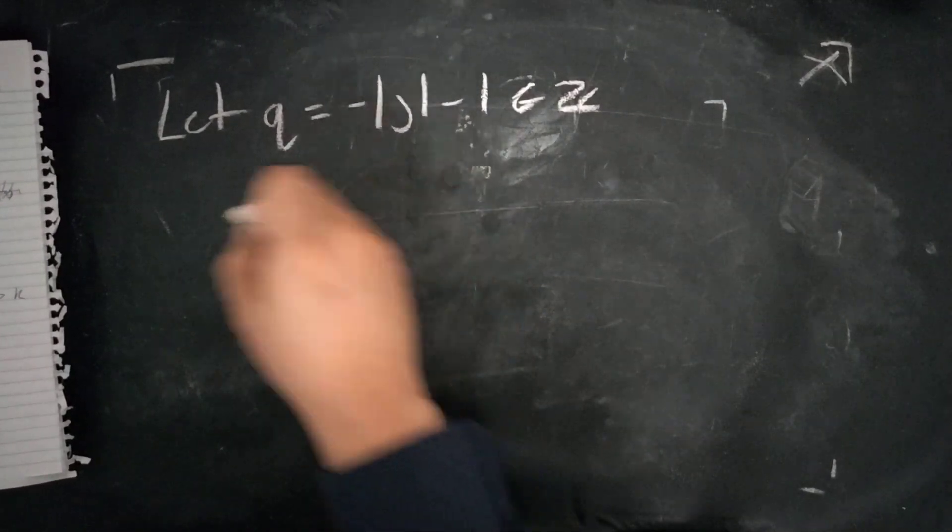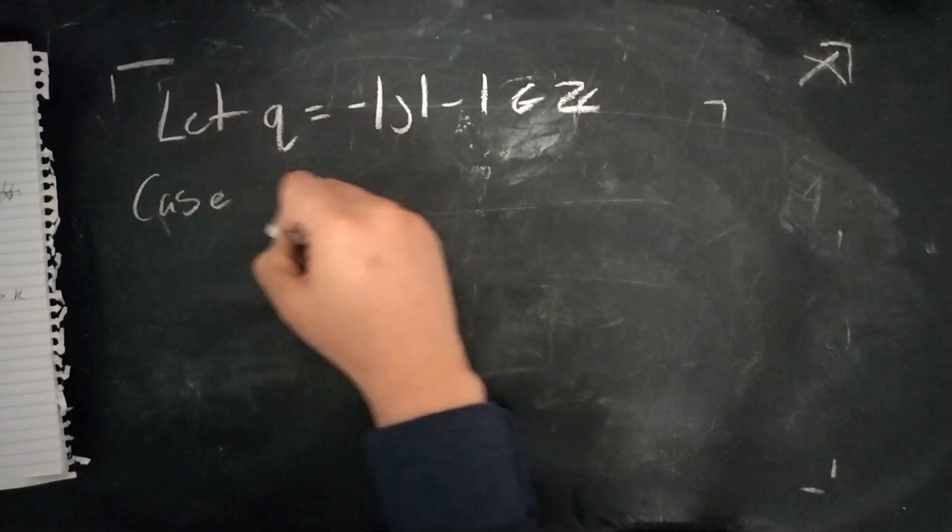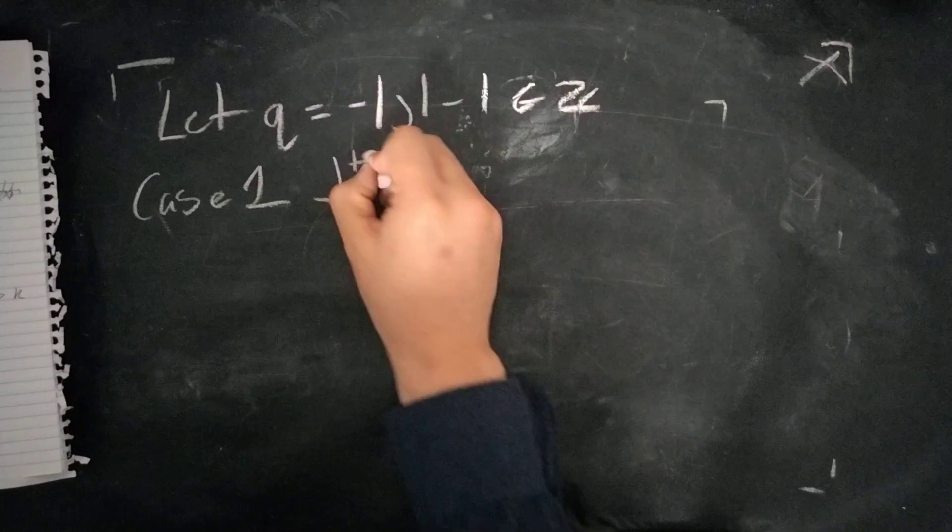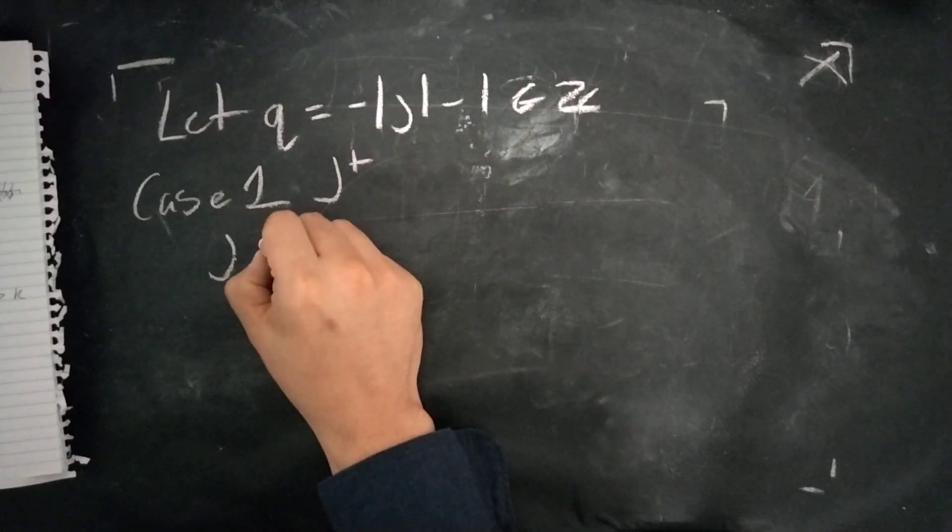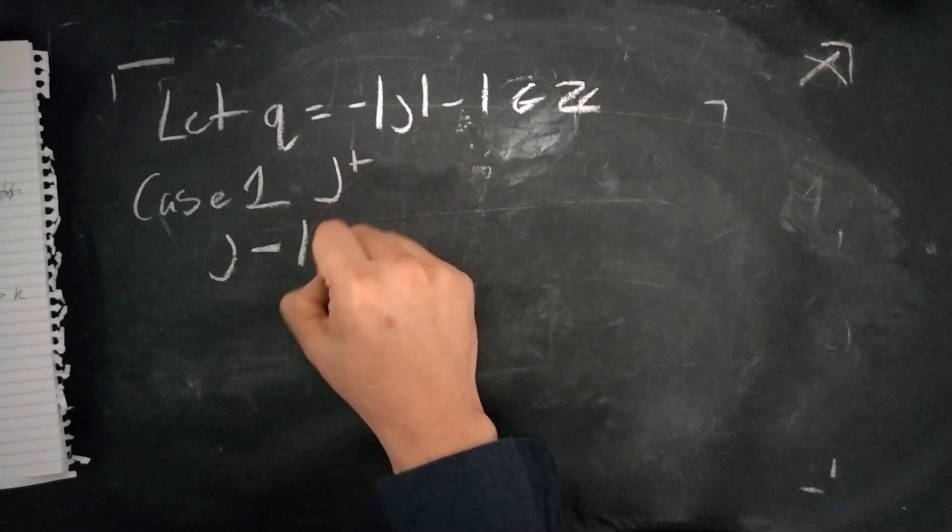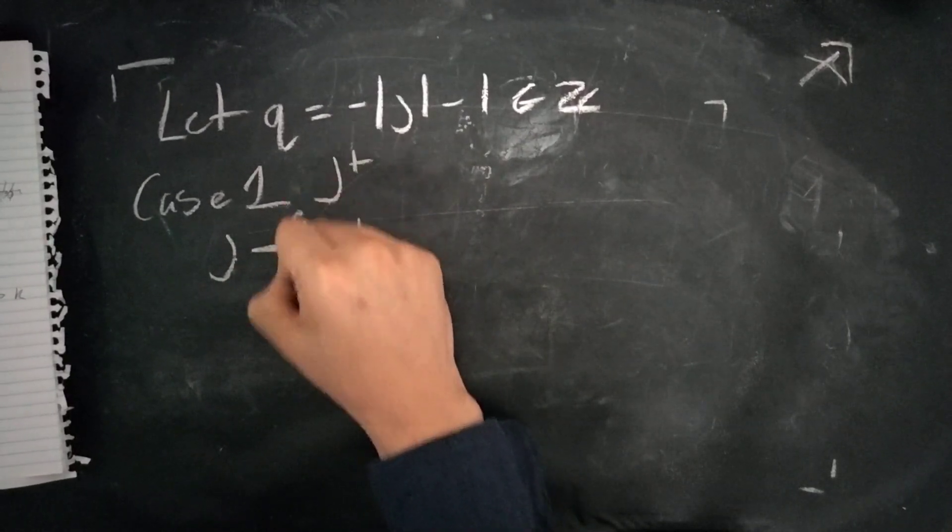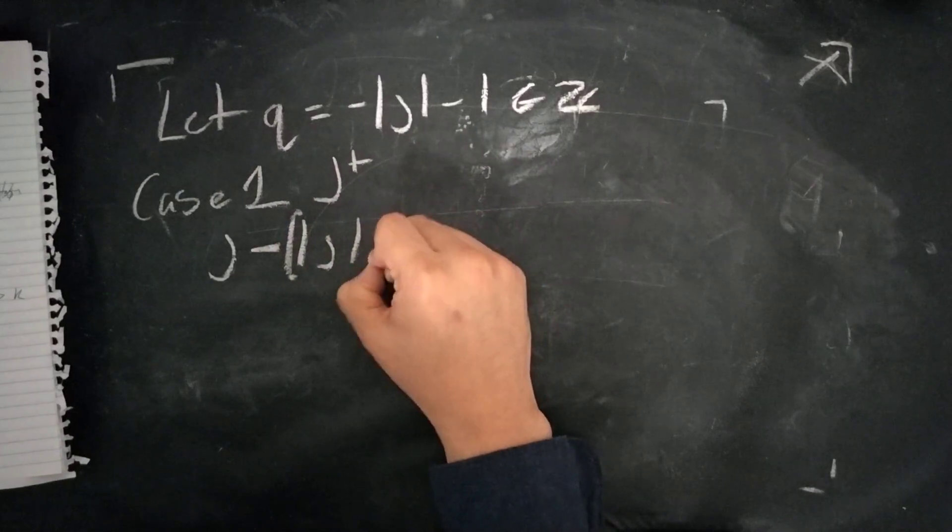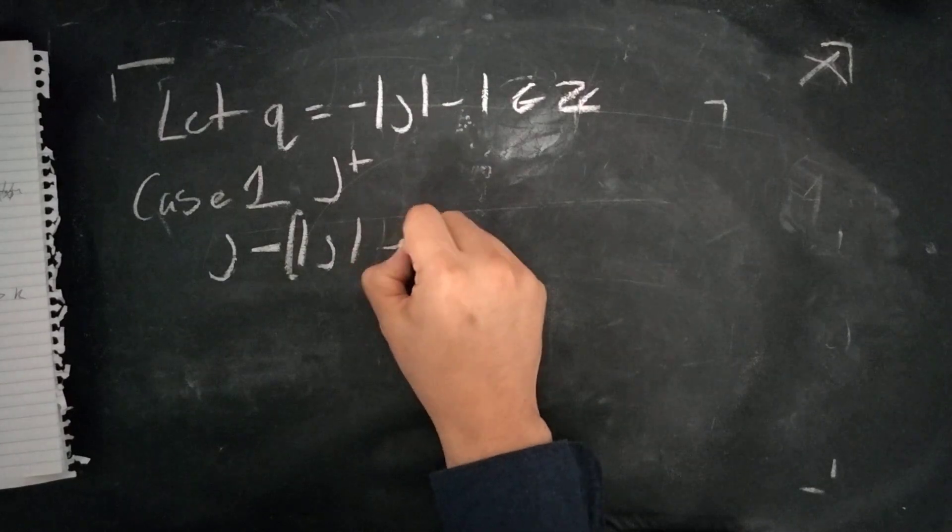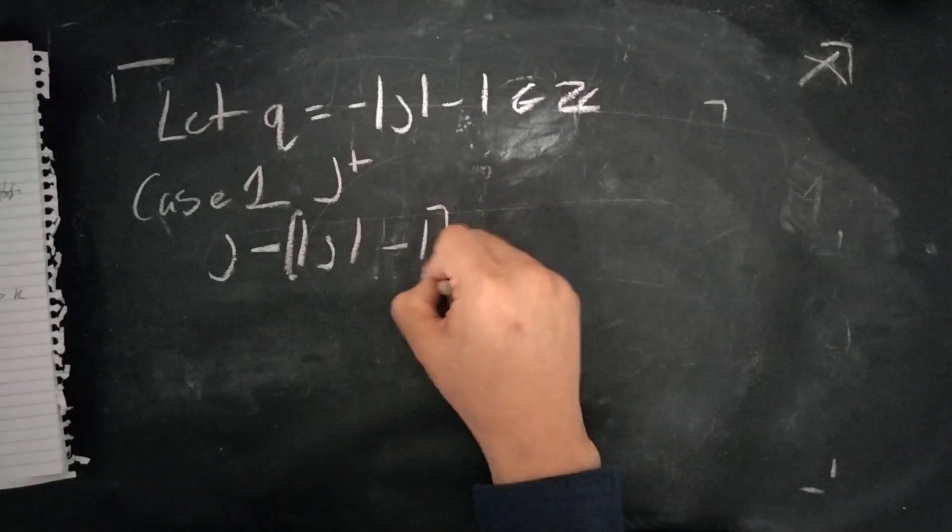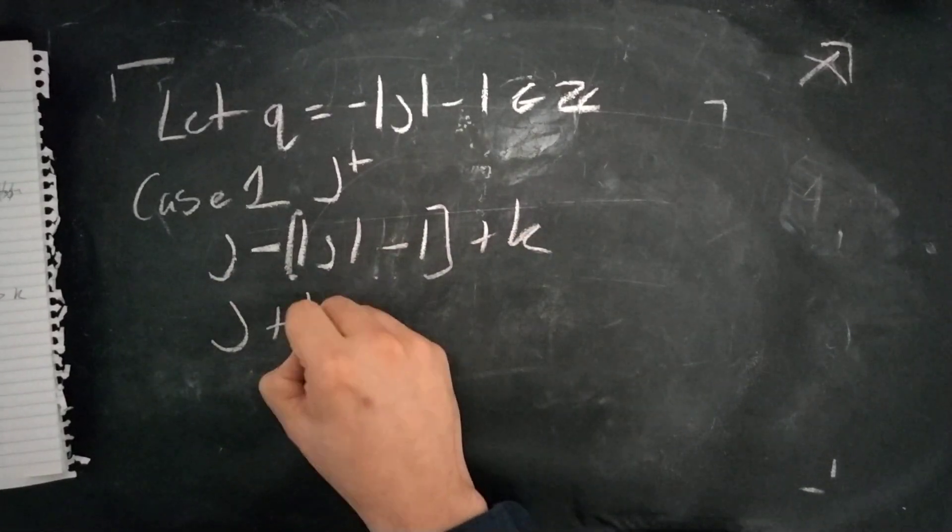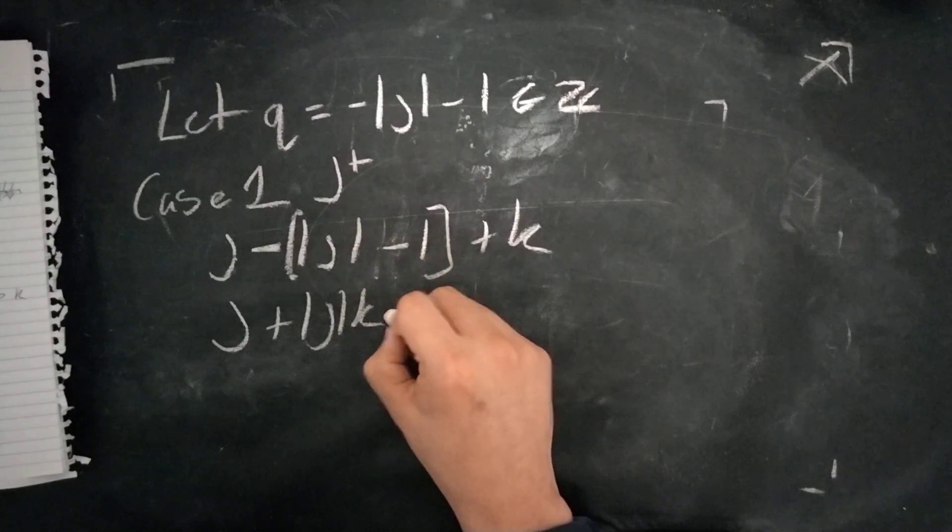Now we have to break this down into cases. Case one, we'll say J is positive. In this case, J minus the absolute value of J minus one, plus one, minus one, plus K.